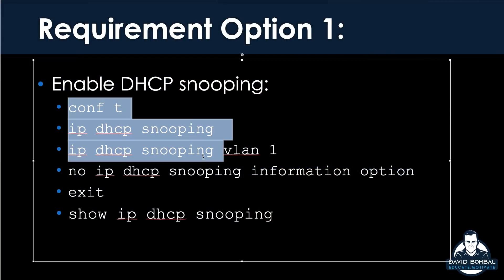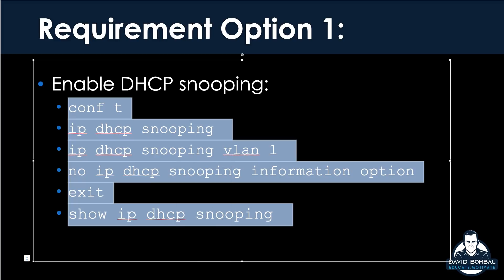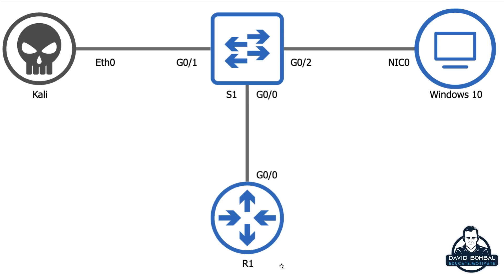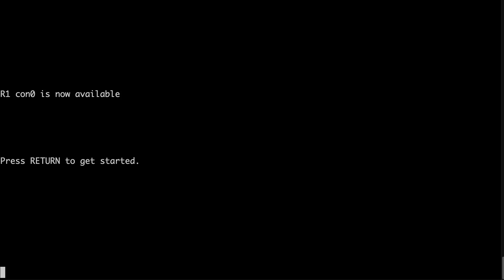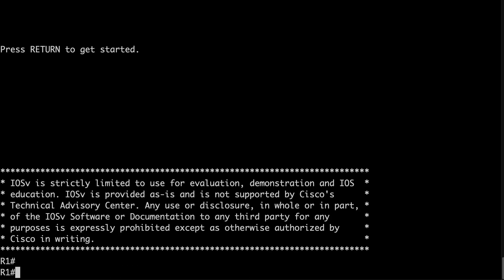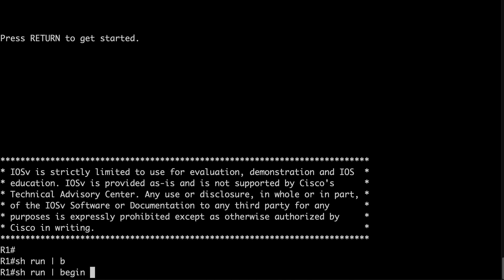The first thing we need to do is enable DHCP snooping. I've covered this in detail in a previous video, so I'm just going to copy and paste the commands into the switch. In our topology, we've got a Cisco router configured with a DHCP server. I'll run 'show run | begin DHCP' on the router — that filters the configuration until the keyword DHCP is found.